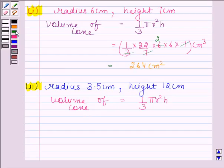By substituting the values of π, r and h we get 1/3 × 22/7 × 3.5 × 3.5 × 12 cm³.